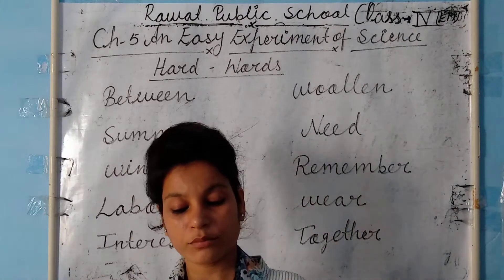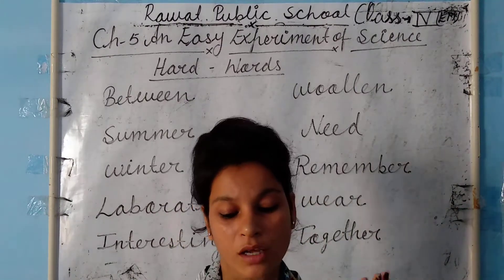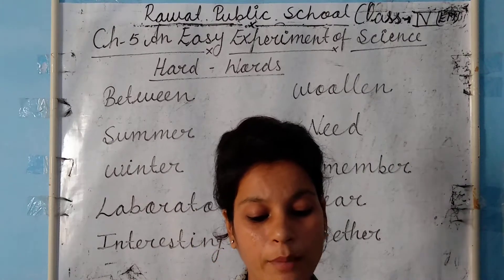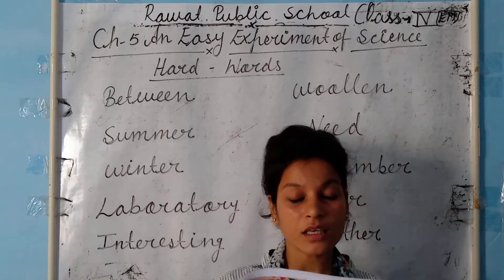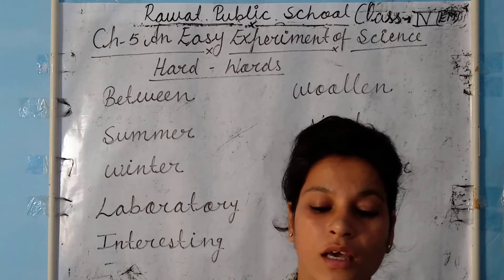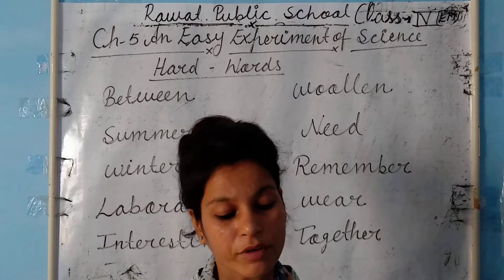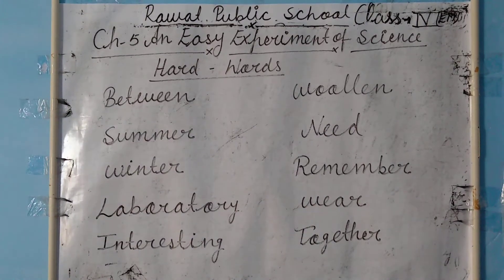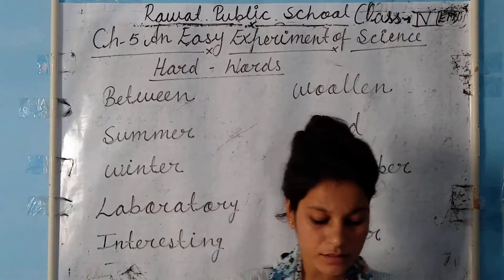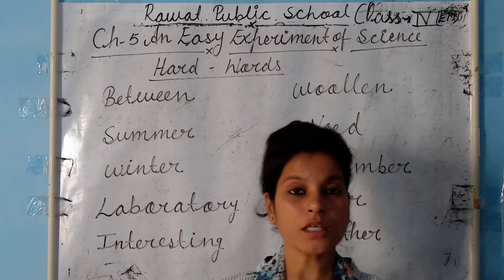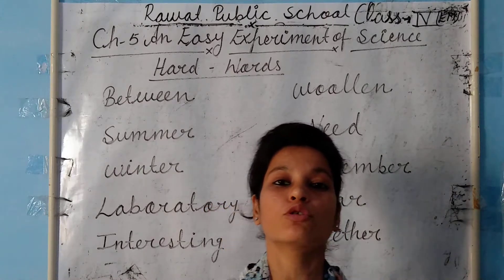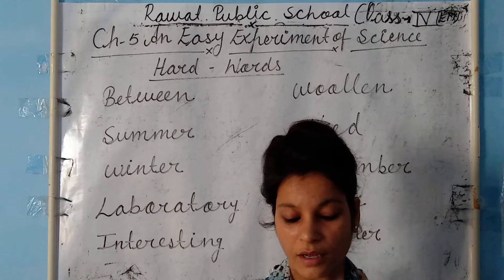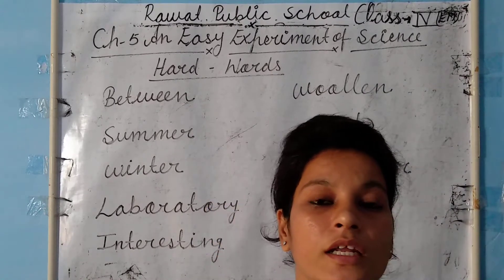Anshu, can you tell me why we wear woolen dark-colored clothes in winter and light-colored cotton clothes in summer? Do you not remember what our science teacher demonstrated last month in the laboratory? That experiment answers both of these questions. We can do the experiment again if you like. Anshu says: Yes, I like to do it again — it is very interesting. What things do we need for it?